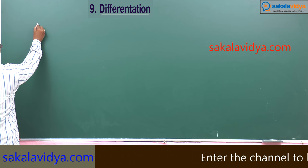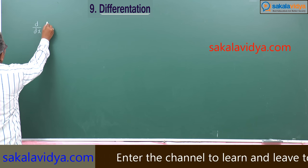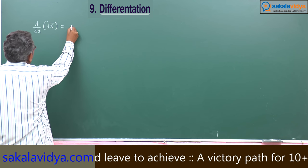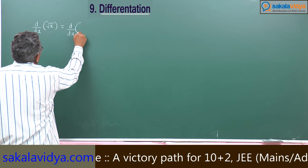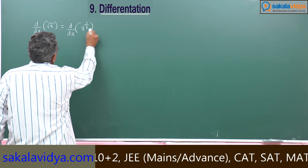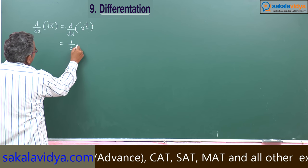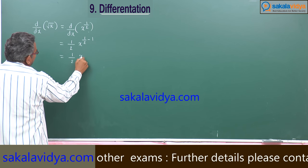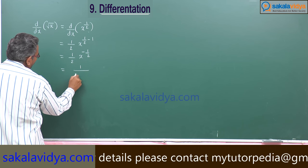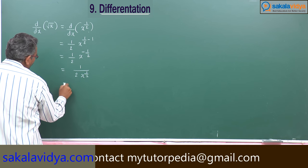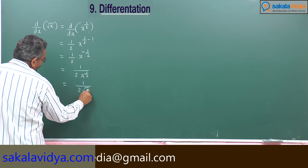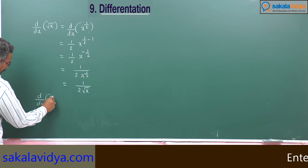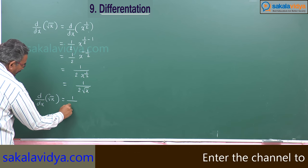Similarly, if you want to find d by dx of root x, this root x can be written as x to the power of half. So d by dx of x to the power of half is half into x to the power of half minus 1, which is half into x to the power of minus half, that is 1 by 2 into x to the power of half, so 1 by 2 root x. Therefore, the derivative of root x is equal to 1 by 2 root x.